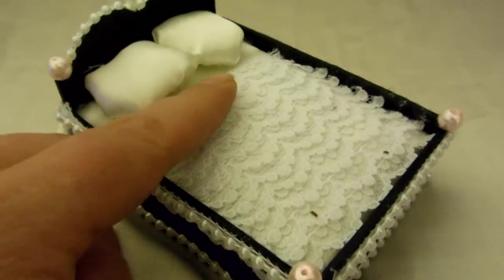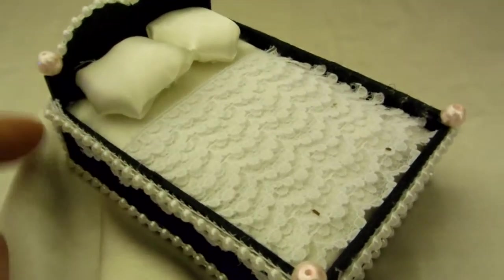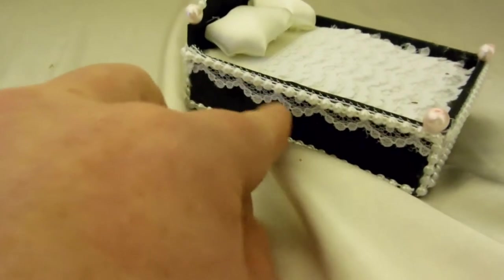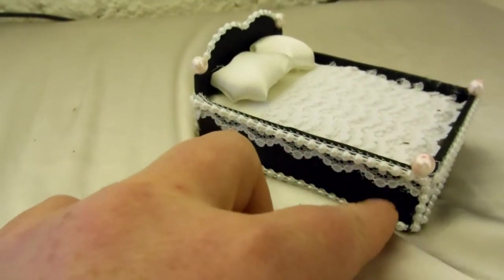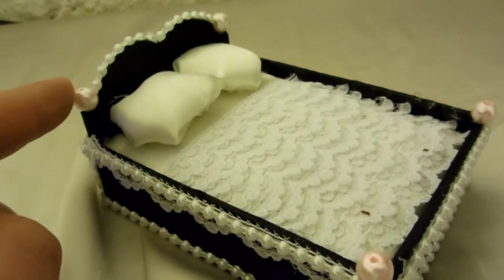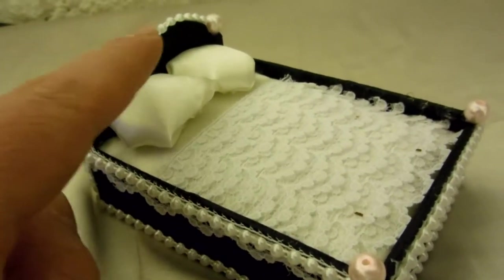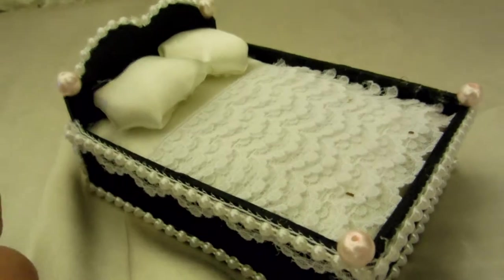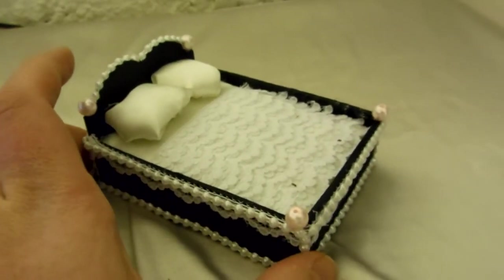I covered the sides with that same lace and added pearls down the sides and on top. I put some baby pink pearls as the knobs of the bed. That's what I did for the bed.